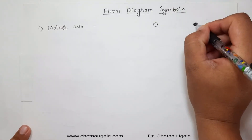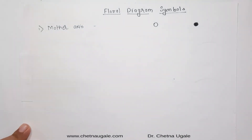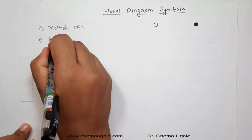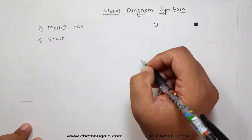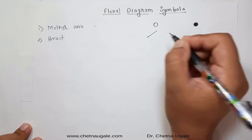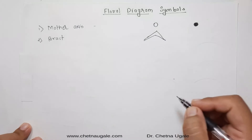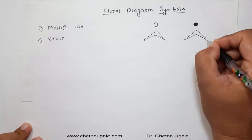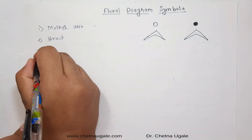The next one is the bract. A bract is generally present on the anterior side of the floral diagram and is represented by a specific symbol. The bract is the outermost part of the floral diagram.